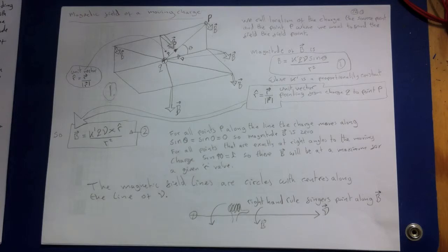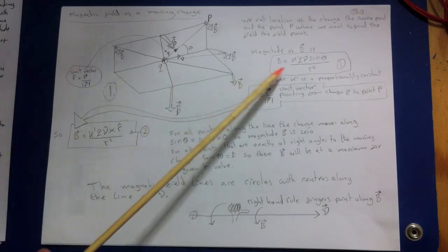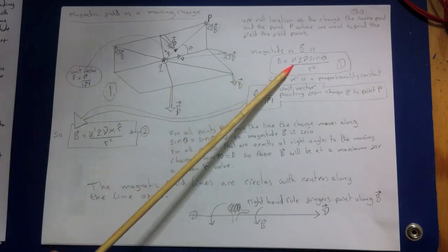It is perpendicular to the plane containing this line and the particle's velocity vector V, as shown in the figure. Furthermore, the field magnitude is proportional to the sine of the angle theta between these two directions. Thus the magnitude of the magnetic field at point P is given by this equation.